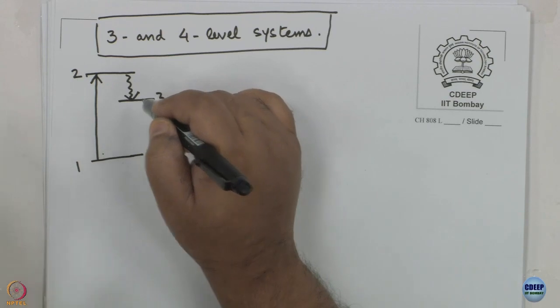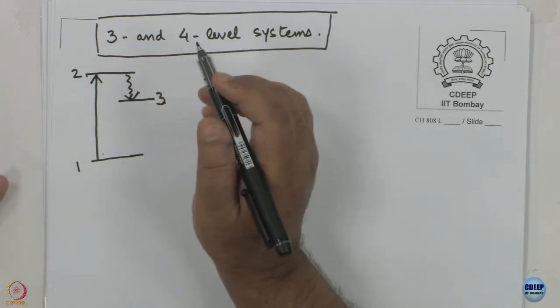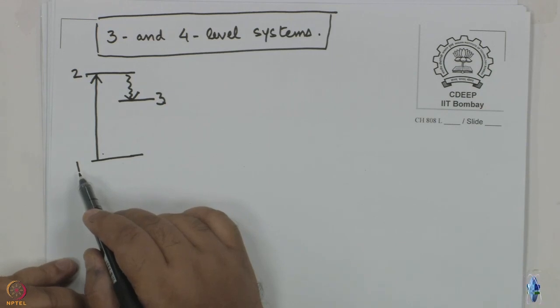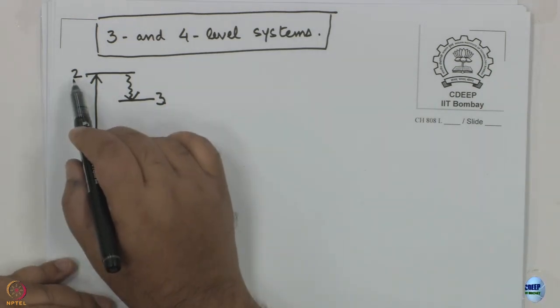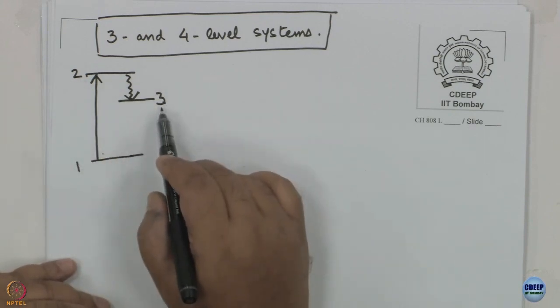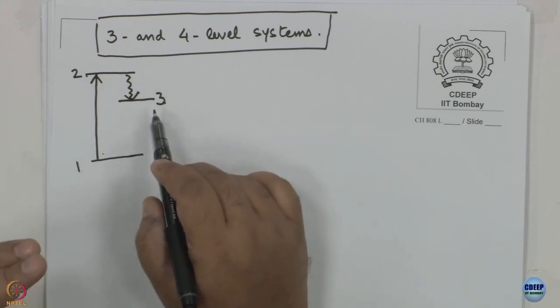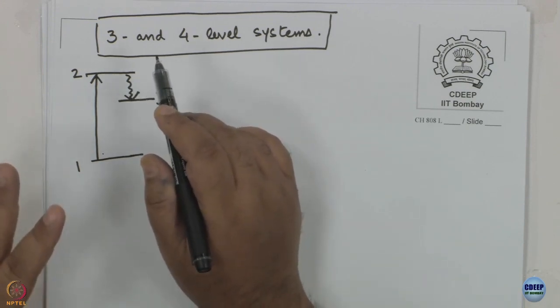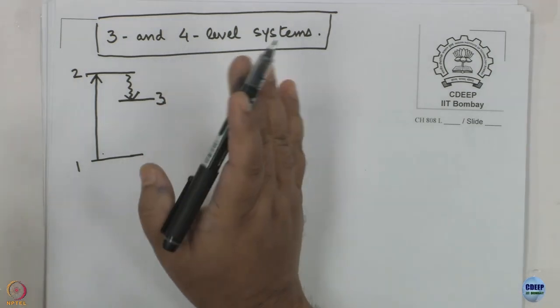An example we will all understand: state one is S0 (ground singlet state), state two is S1 (excited singlet state), and state three is a triplet state. In that case, this non-radiative process would be ISC (intersystem crossing). As you know, ISC can actually be promoted by using heavy atoms, and there are mechanisms by which you can make ISC very efficient.